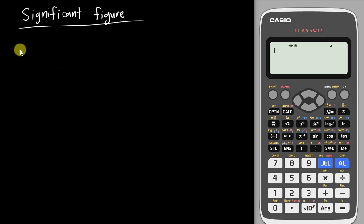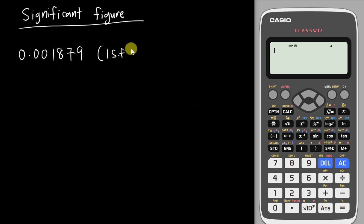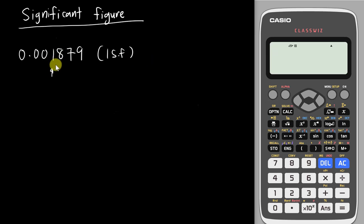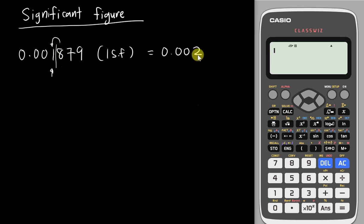Let's say today I have 0.001879. If I want to round off this to 1 Significant Figure, I will ignore all the zeros at the front and start counting from the first digit, which is 1. You cannot assume the first digit will be 0. Then you round it off — you draw a line after 1, and since the next digit 8 is bigger than 5, you add one value to the front and get 0.002.